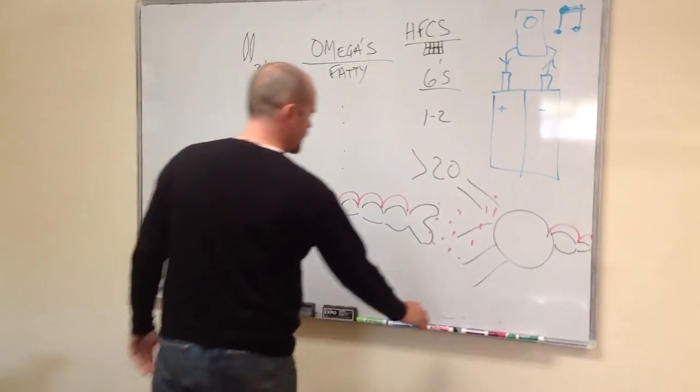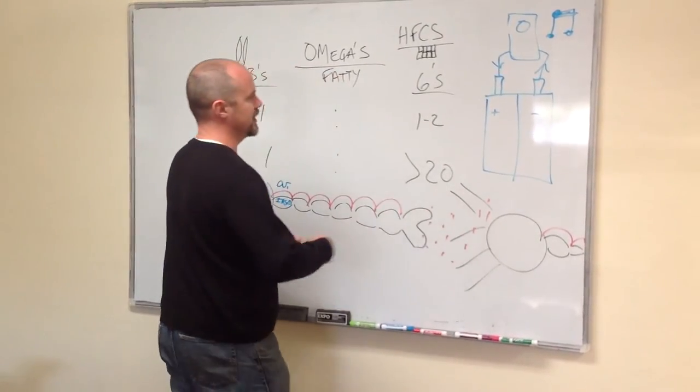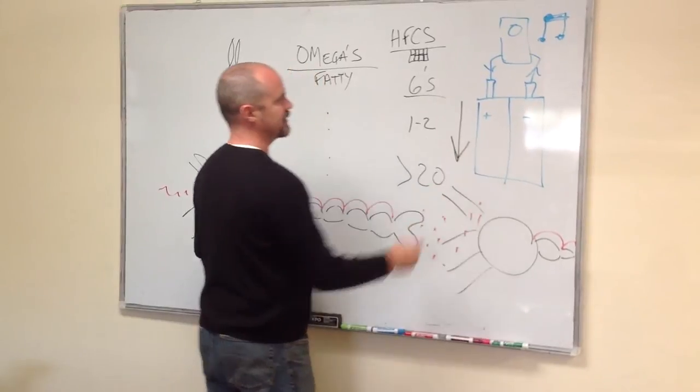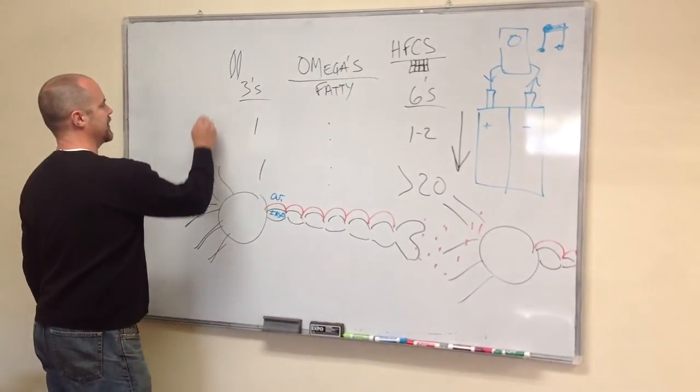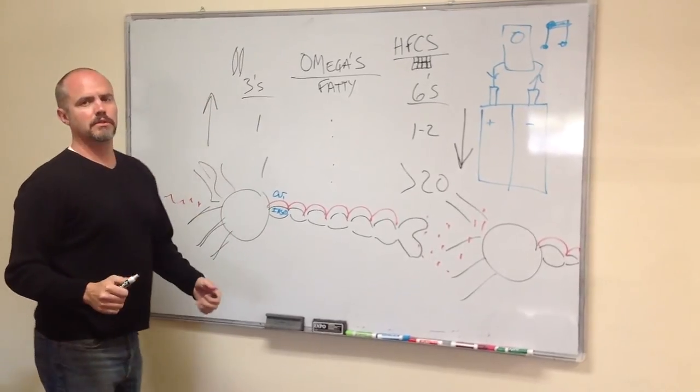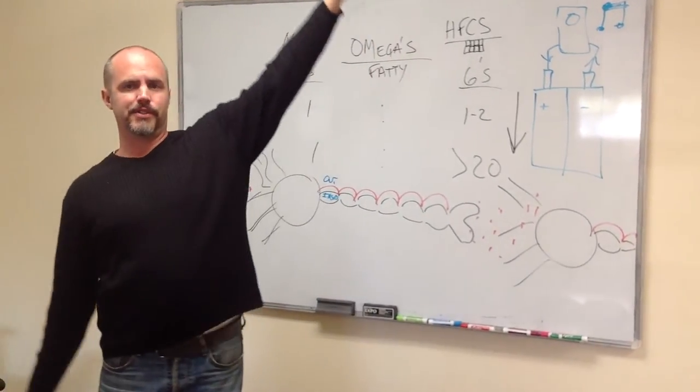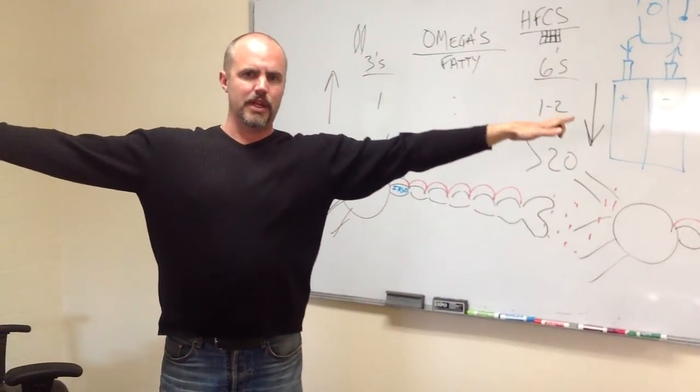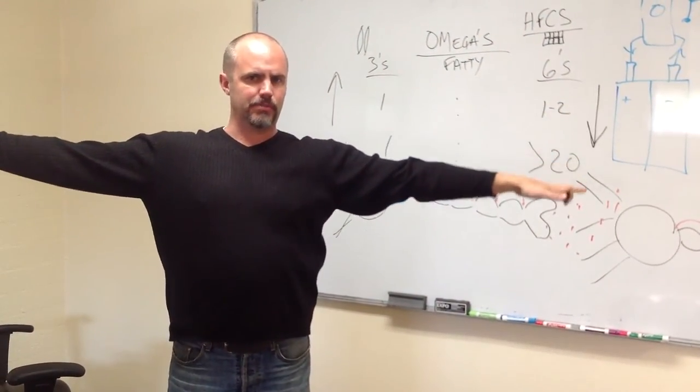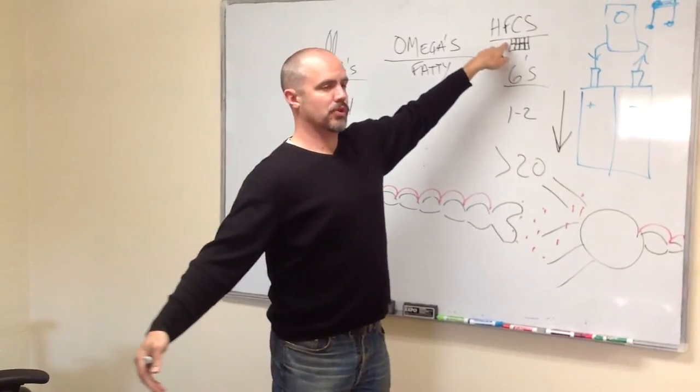So what's the answer? The answer to correct this situation is we want to eat less sixes, so we want to have less high fructose corn syrup, and we want to supplement with more threes. And when we do both, instead of the ratio being really high in sixes and low in threes, now all of a sudden we're taking threes as a supplement and we're reducing our sixes because we're reducing our intake of high fructose corn syrup.